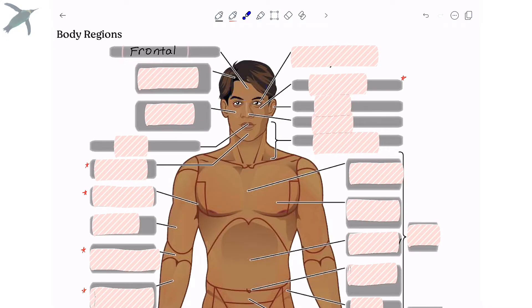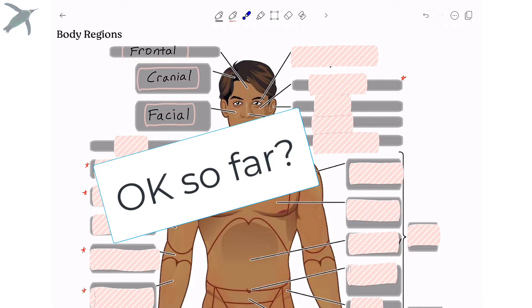The front of the head is the frontal region. The region of the head containing the brain is referred to as the cranial region. The face we refer to as the facial region. So far, so good, right?